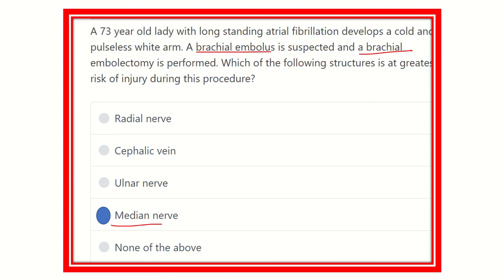Our final answer is the median nerve, because the median nerve is very close to the brachial artery throughout its course. Regarding the other options: the radial nerve lies posteriorly, while the brachial artery lies anteriorly. The cephalic vein is superficial. The ulnar nerve passes more behind the medial epicondyle, in a more medial position relative to the brachial artery. So our answer is the median nerve.